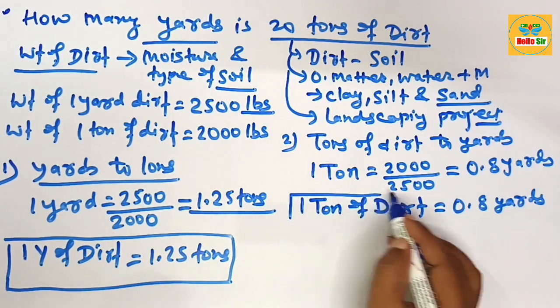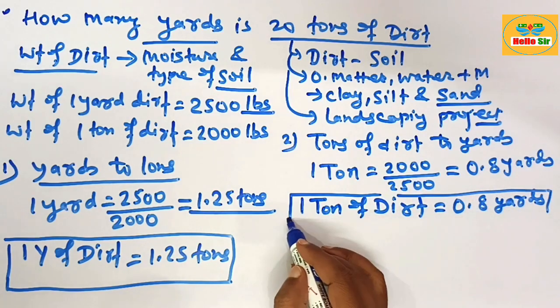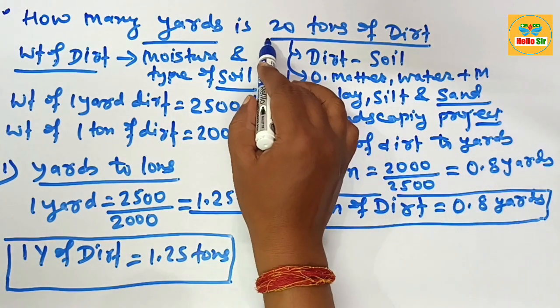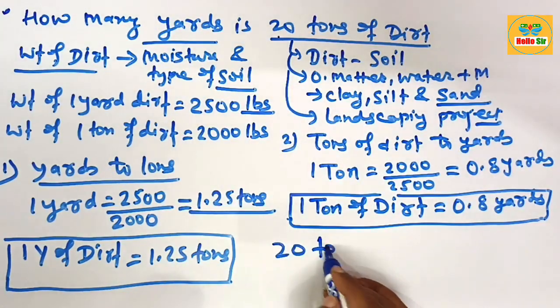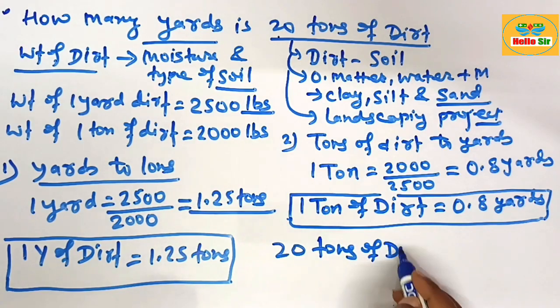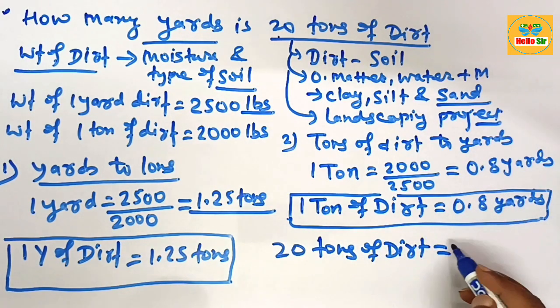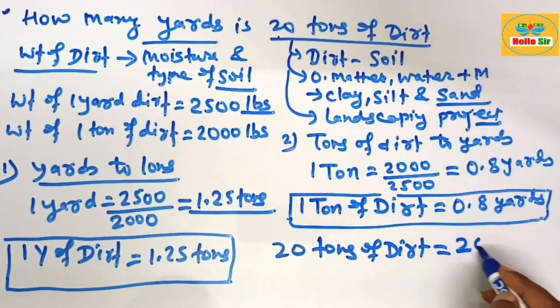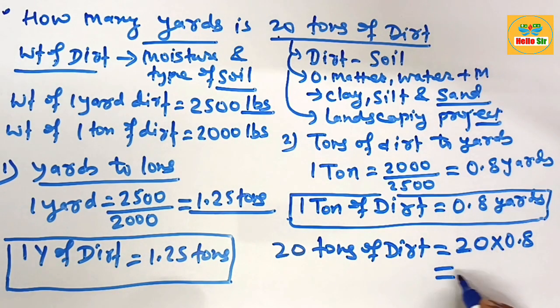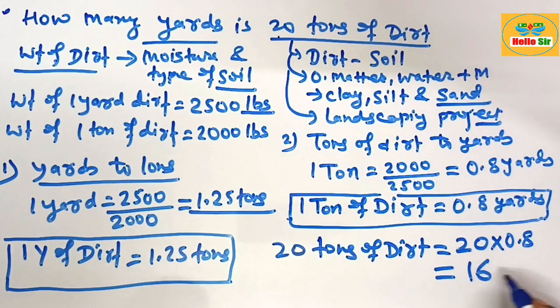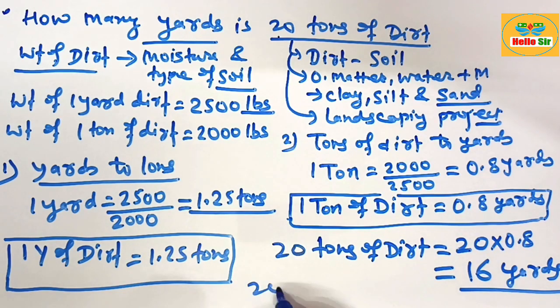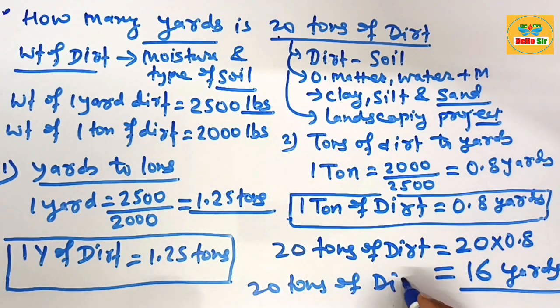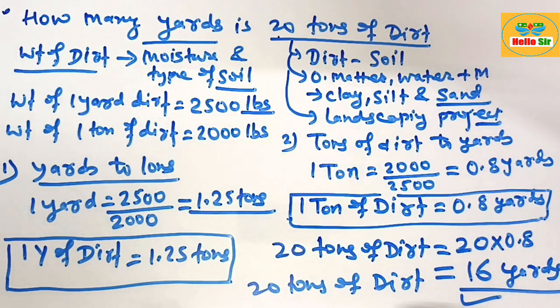Remember this conversion formula which helps in your calculation. Now to convert 20 tons of dirt into yards: 20 tons of dirt to cubic yards, how many yards? You multiply 20 by 0.8 and this comes to about 16 cubic yards. It means 20 tons of dirt equals approximately 16 cubic yards. Thank you.